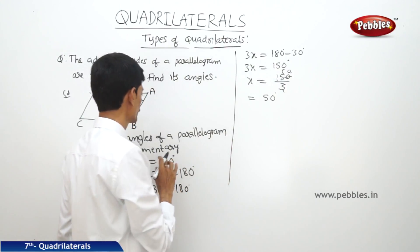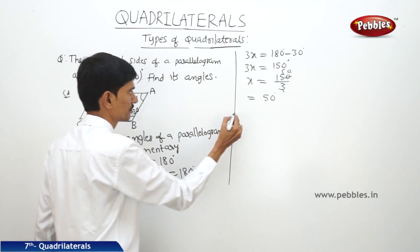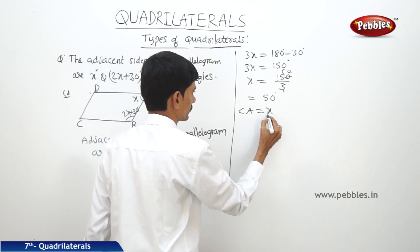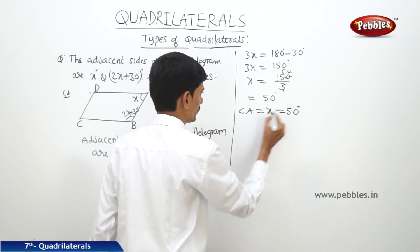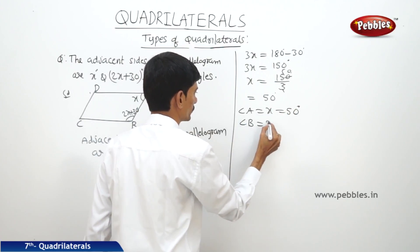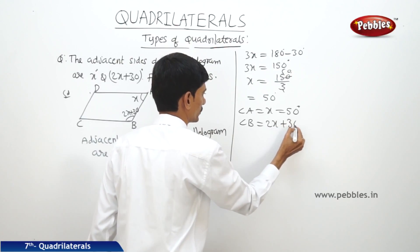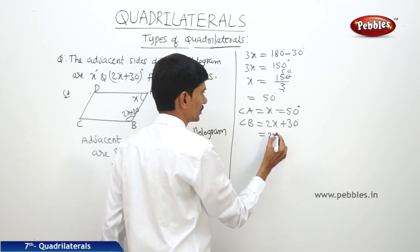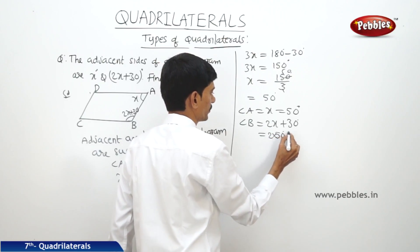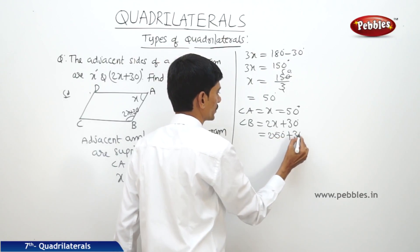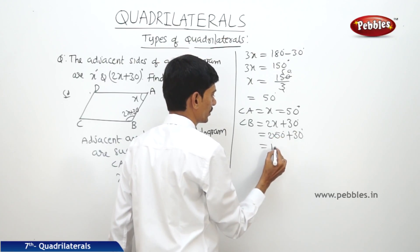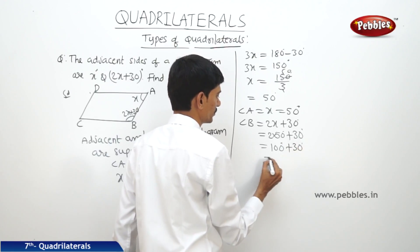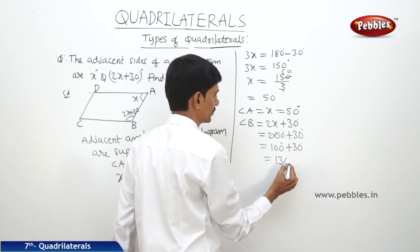So x means angle A equals x, that equals 50 degrees. Then angle B equals 2x plus 30 degrees, so that equals 2 into x value 50 plus 30 degrees — 100 degrees plus 30 degrees — so this equals 130 degrees.